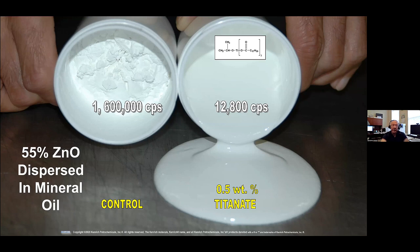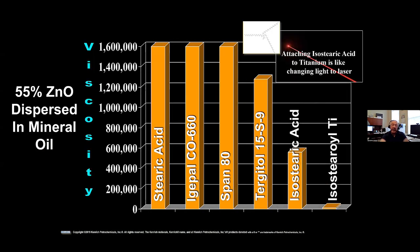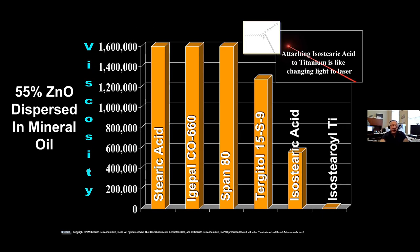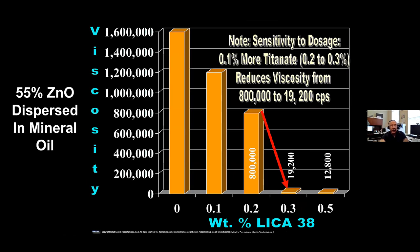The viscosity dropped from 1,600,000 centipoise down to 12,800 centipoise, and the energy needed was tremendously reduced. We had tried stearic acid, ethoxylated nonylphenol, and other additives like Tergitol 15-S9, and isostearic and stearic acid itself. But when you put the stearyl organofunctionality onto the titanium, you get like going from a light to a laser — the atomic effect is incredible and the viscosity drops like a rock. The amount you need is very sensitive to dosage, and in tenths of a percent you get big changes in viscosity.